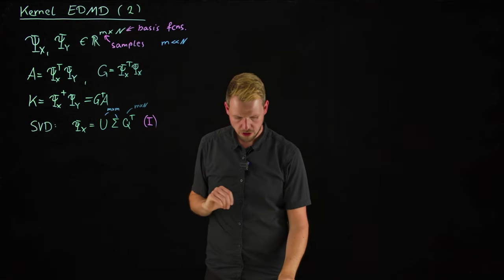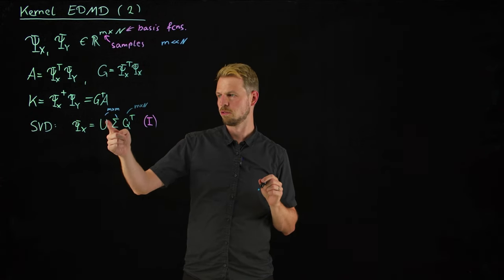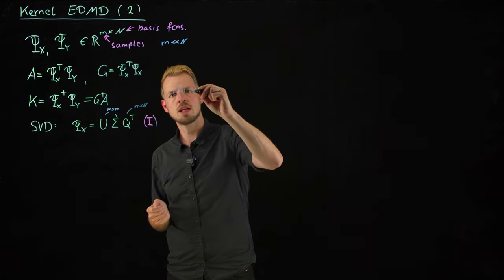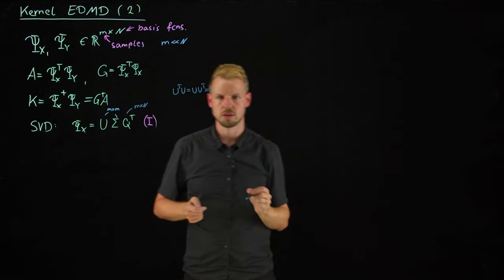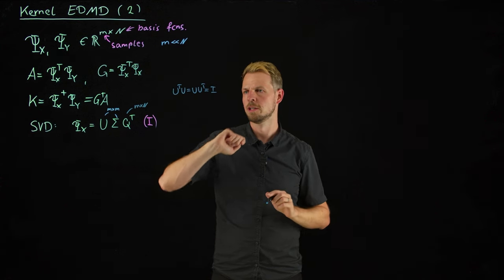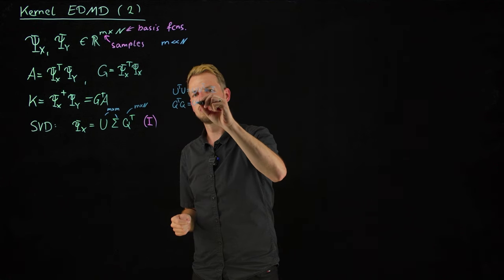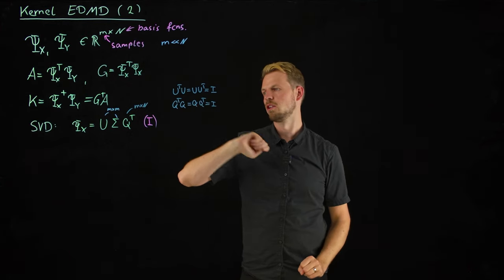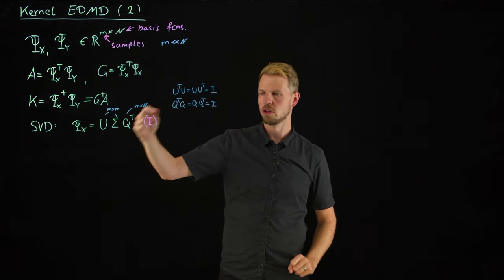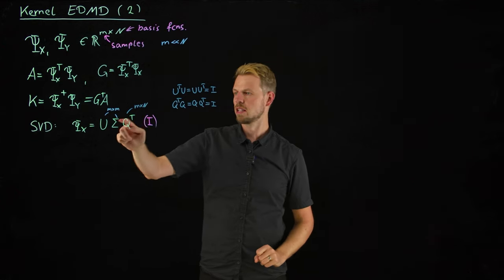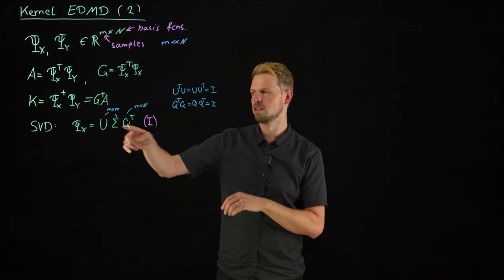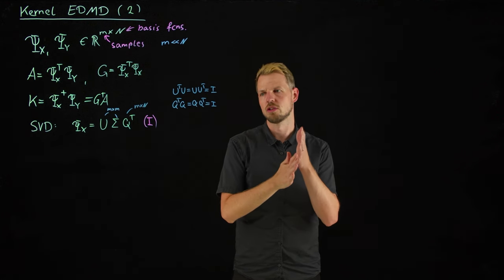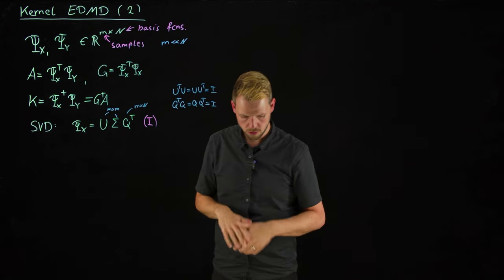The SVD has very nice properties. The columns of U and Q are pairwise orthonormal, meaning U^T U = UU^T = I and likewise Q^T Q = I. This is an orthonormal basis, so inversion is simply realized by taking the transpose. Inverting sigma is also easy since we invert each diagonal element individually. For zero elements, we take the pseudoinverse — denoted with a plus sign — which neglects all zero components, effectively reducing to the non-zero spectrum.